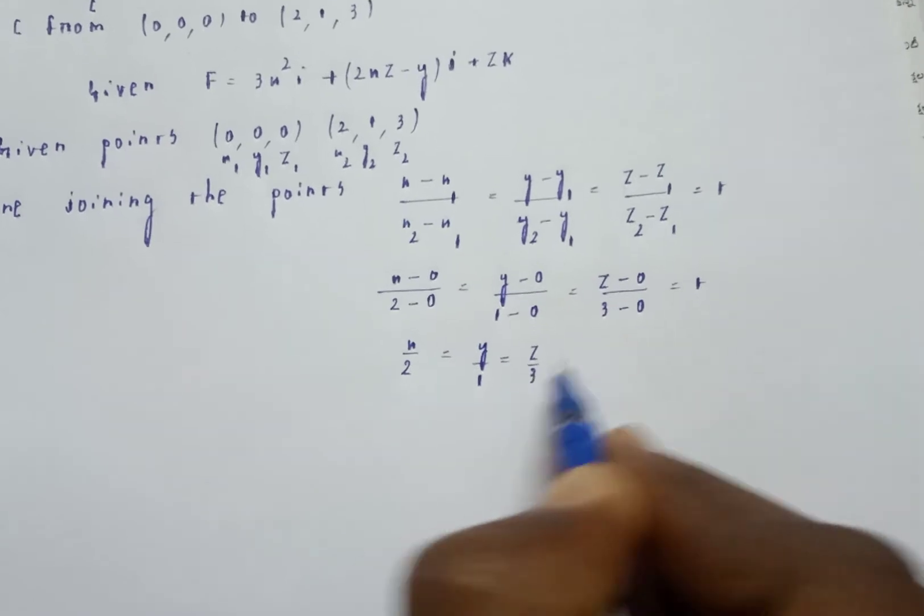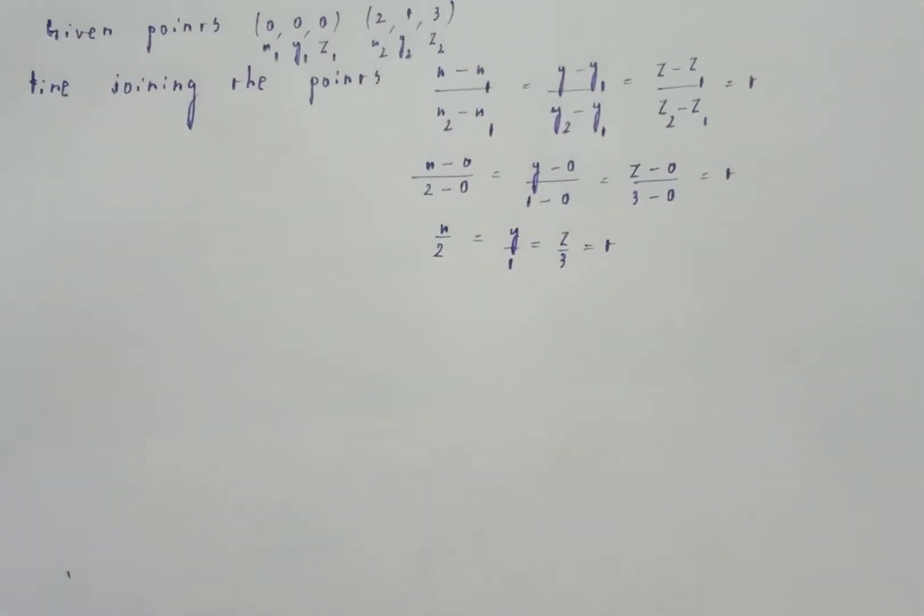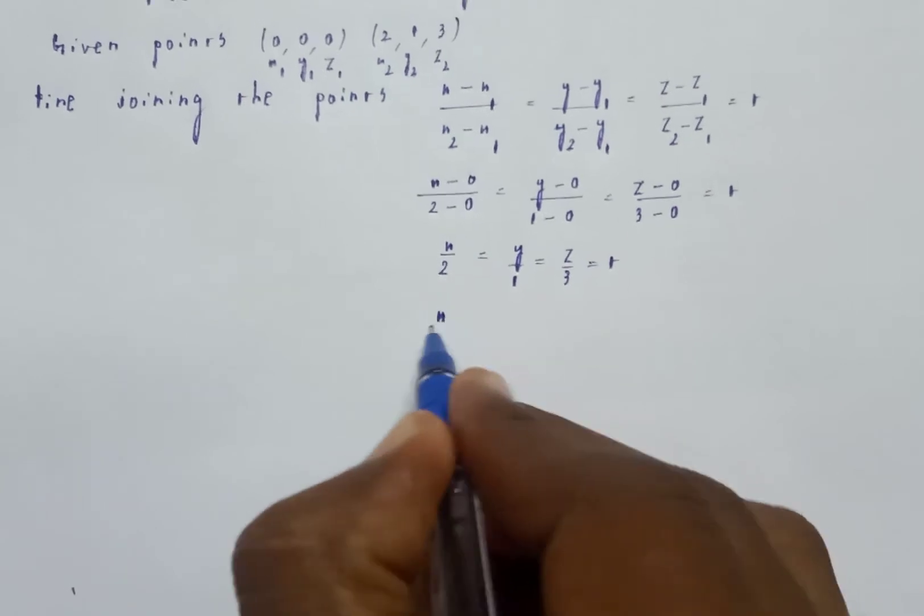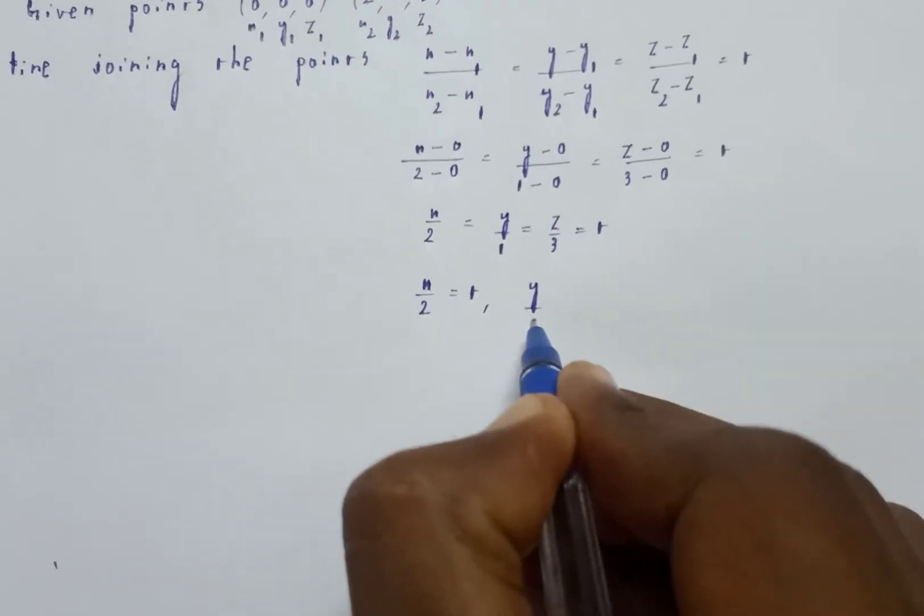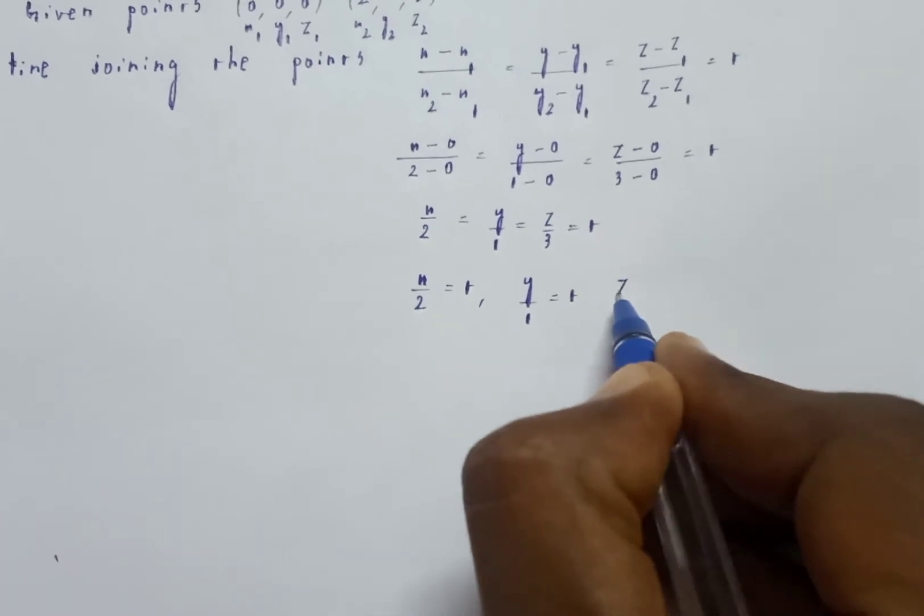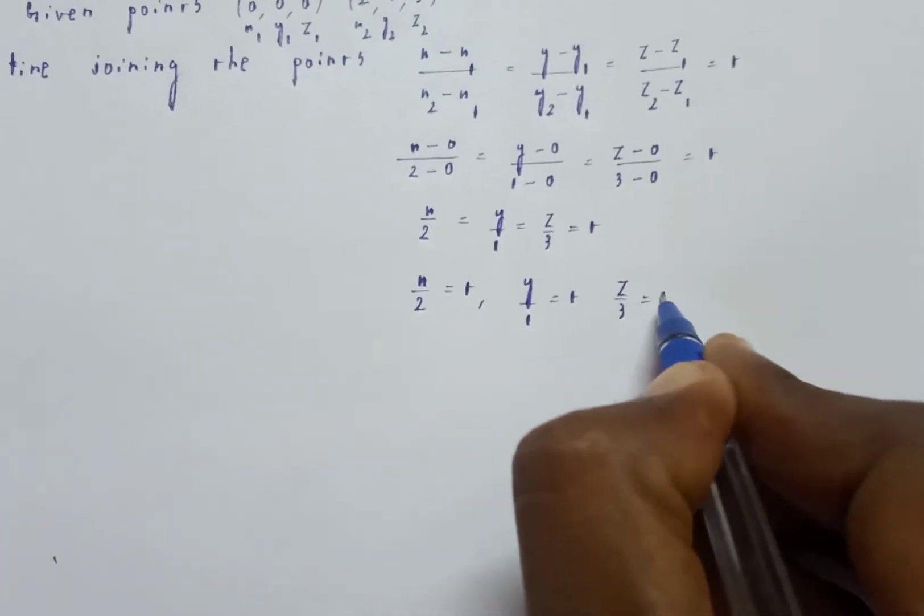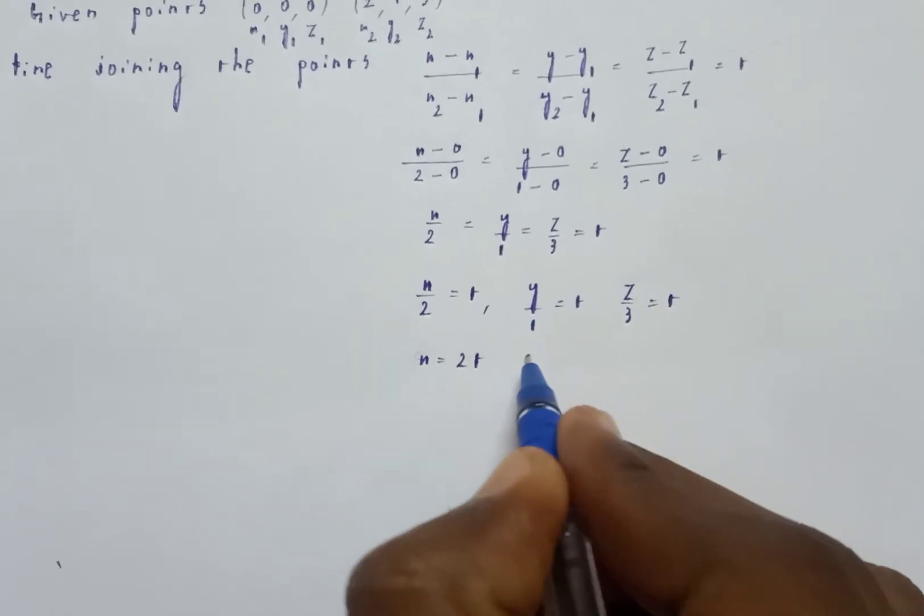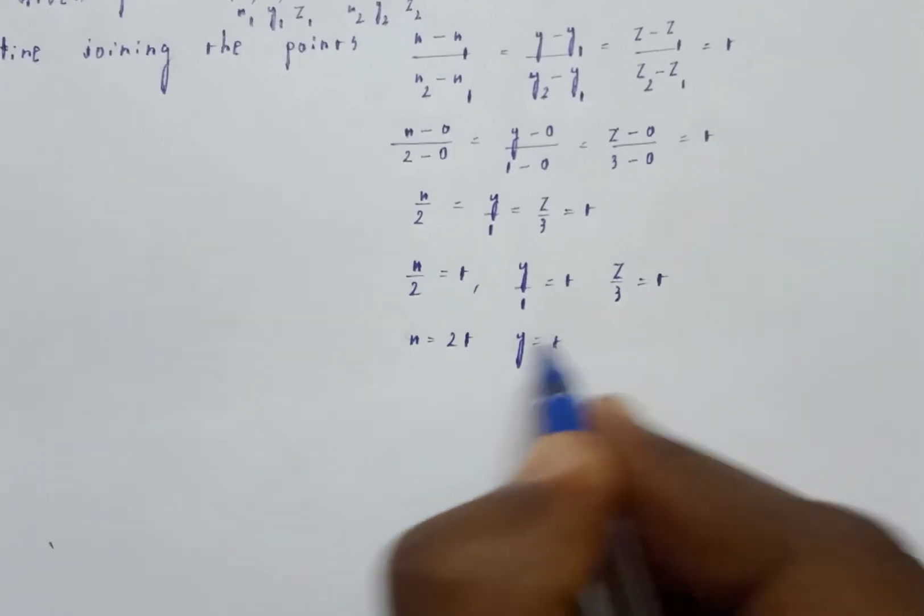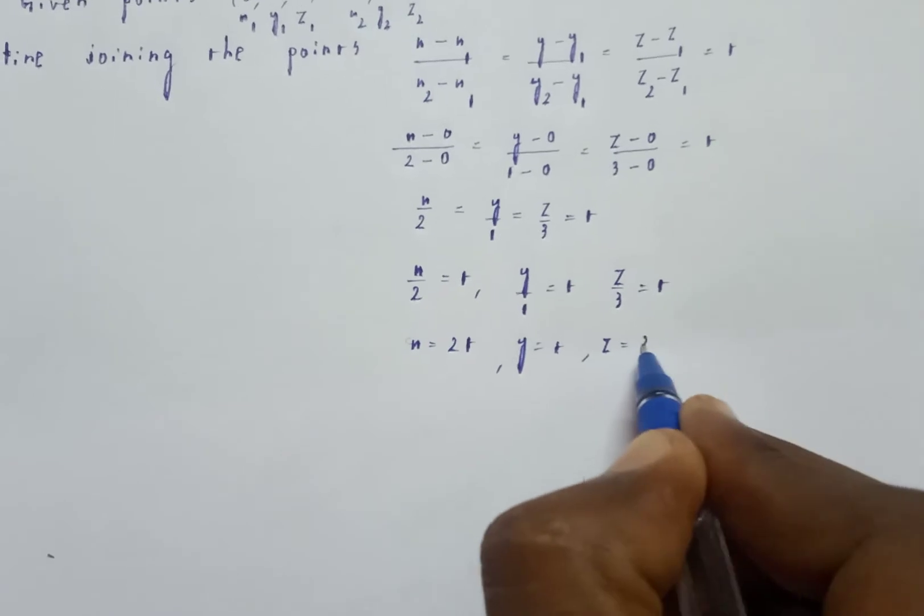Therefore x by 2 is equal to y by 1 is equal to z by 3 is equal to t. Cross multiplying: x is equal to 2t, y is equal to t, z is equal to 3t.